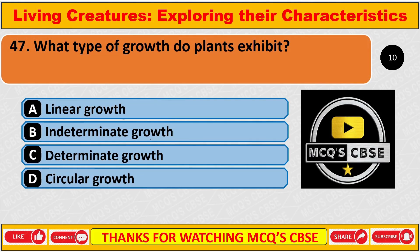What type of growth do plants exhibit? The correct answer is B: Indeterminate growth.